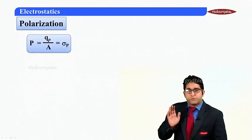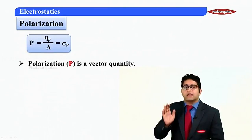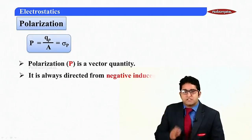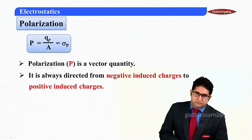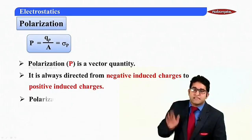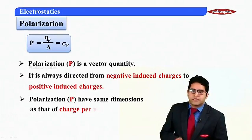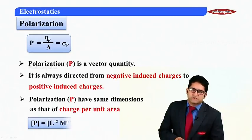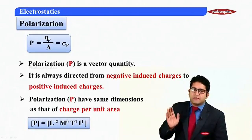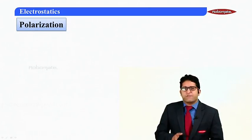Polarization is a vector quantity and it is always directed from the induced negative charge towards the induced positive charge. This quantity has the same dimensions as surface charge density, that is charge per unit area. The dimensions of polarization are L⁻² M⁰ T¹ I¹.